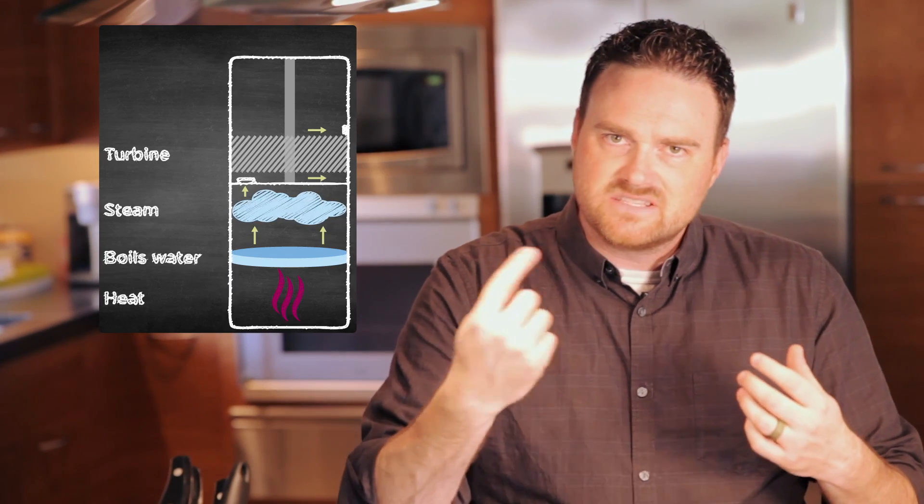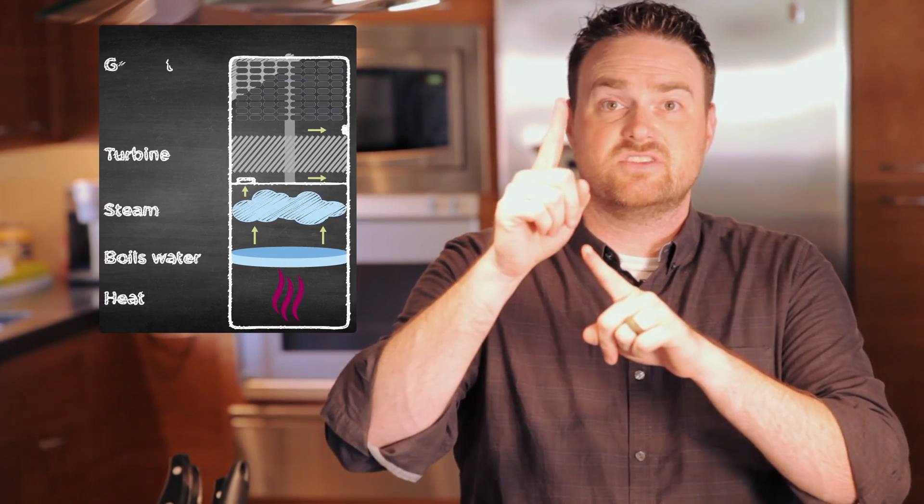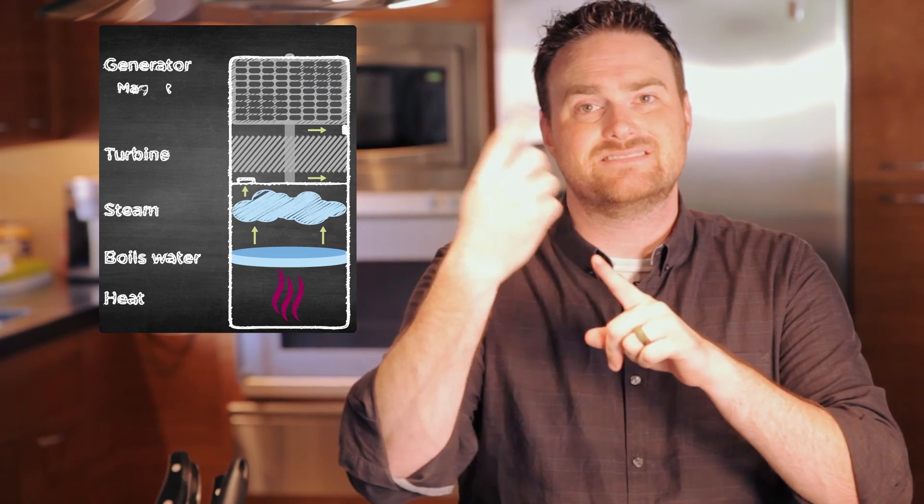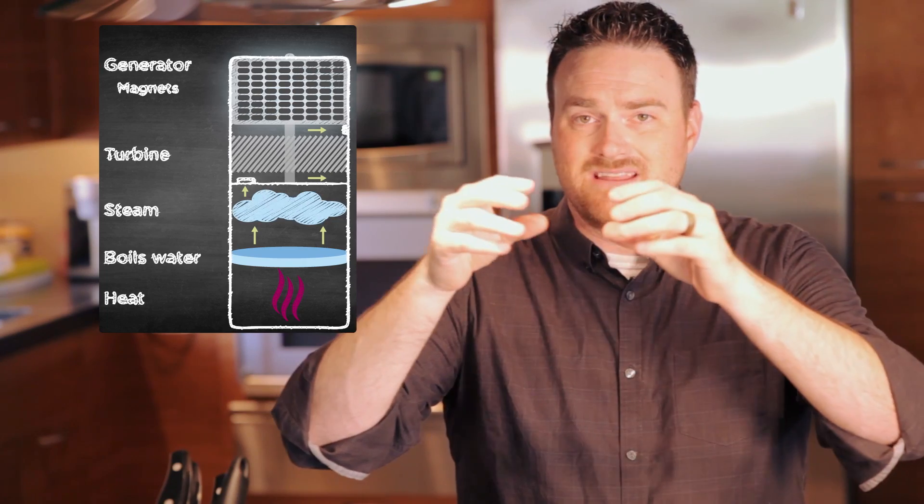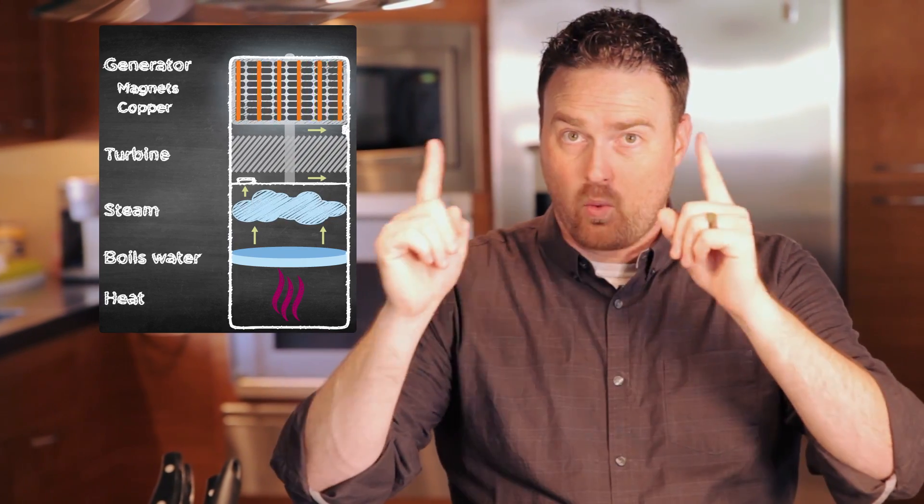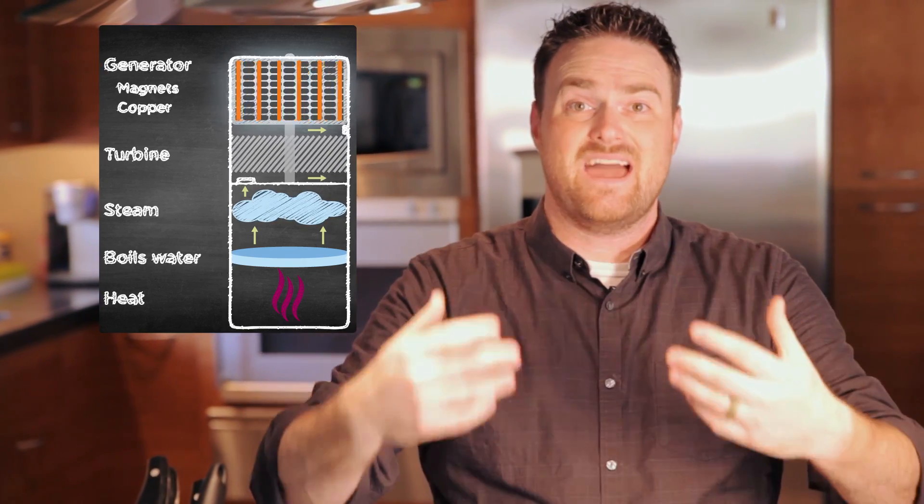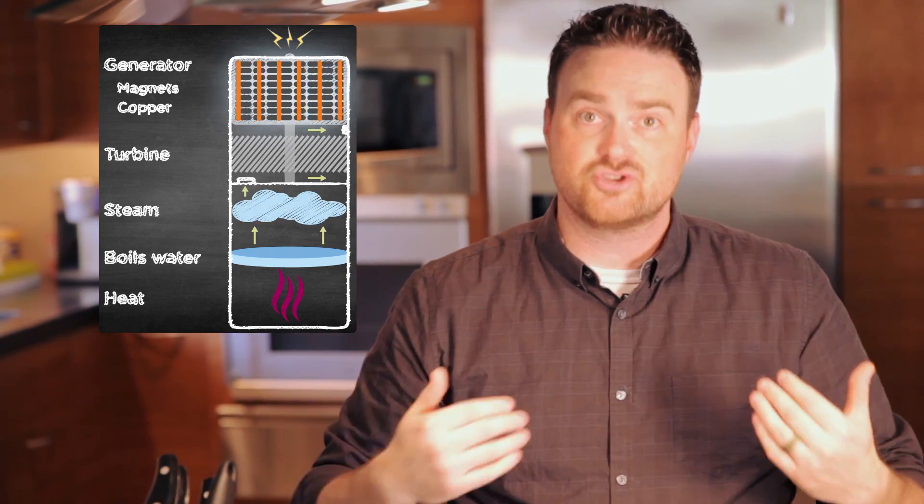As that turbine spins, it spins the generator, which has a bunch of magnets in it. As those magnets spin, it creates a magnetic field. When the magnetic field interacts with the copper wires that are in there, that interaction gives us electricity.